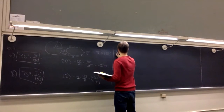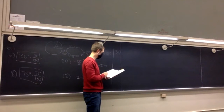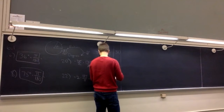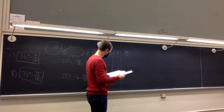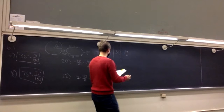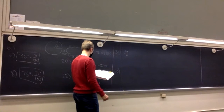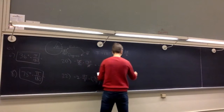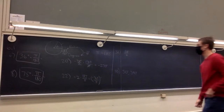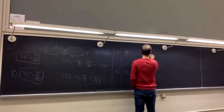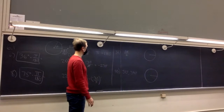Question 32: an angle is in standard position given. Find two positive angles and two negative angles that are coterminal with the given angle. 32 is 11π over 6. Question 40 asks if two angles — 50 degrees and 340 degrees — are coterminal. So first, what does coterminal mean?